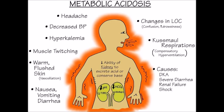Other causes of acidosis include depletion of alkali reserves due to diarrhea, dysentery, cholera, etc., or accumulation of carbon dioxide in anoxia as in circulatory and pulmonary diseases, and accumulation of acetone bodies resulting from starvation, vomiting, and diabetes mellitus.